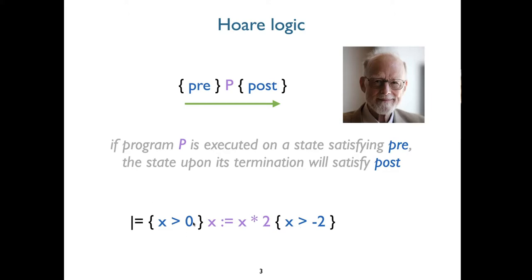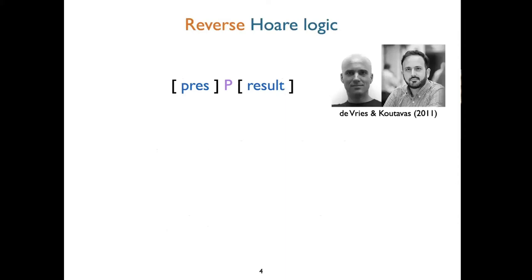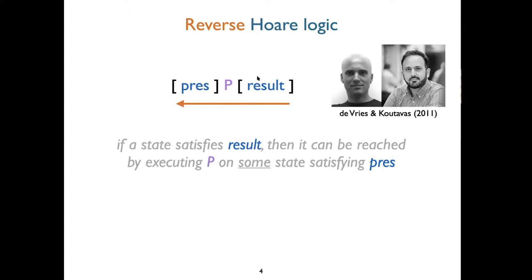This talk isn't about Hoare logic; it's about taking these triples and thinking about them in the other direction. This idea was first proposed back in 2011 in an SCFM paper. I'm using slightly different notation to distinguish this — using square brackets, presumption instead of precondition, and result instead of postcondition. The interpretation goes in the other direction: if you have a state satisfying the result assertion, then it can be reached by executing P on some state satisfying the presumption — not all states, but at least one is guaranteed.